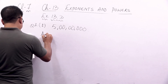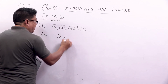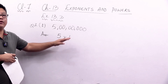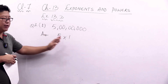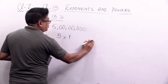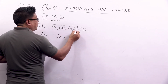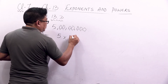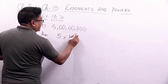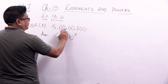So the standard form will be like this. First write the leading digit — for example 5 — always write it as 5 into 10. Then count the number of remaining digits after 5: 1, 2, 3, 4, 5, 6, 7 — seven digits. So you write 10 to the power 7. You always write the first digit, then 10 to the power according to the number of digits that follow.